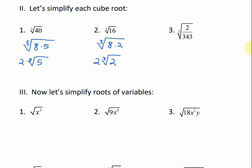For number 3, just like we've done before, let's separate this into two separate radicals. 343 is a perfect cube — the cube root of 343 is 7. So we just have a 7 on the bottom. And then the cube root of 2 — there's no number that we can multiply times itself 3 times to get 2. So that's already simplified. Our simplified radical would be cube root of 2 over 7. Make sure you don't bring that 7 down since it's out of the radical.